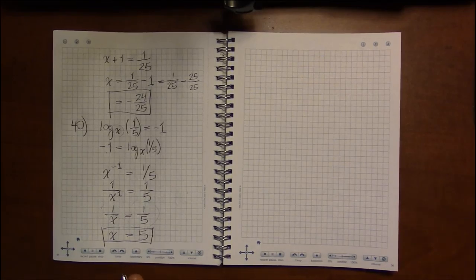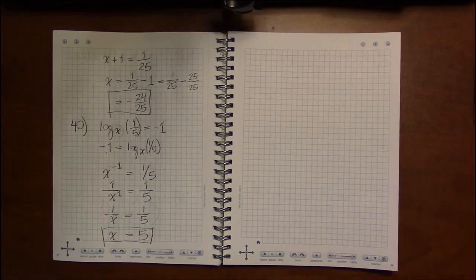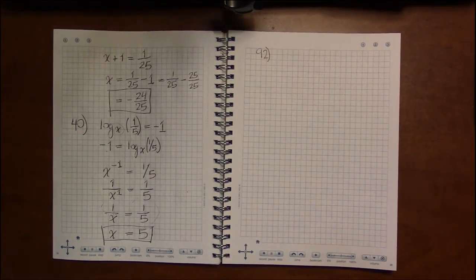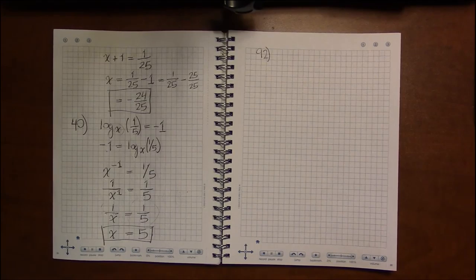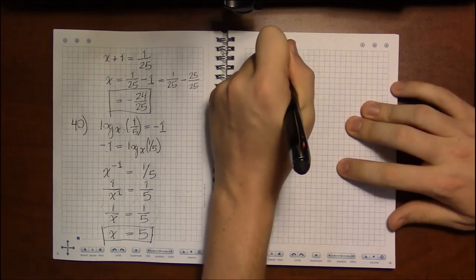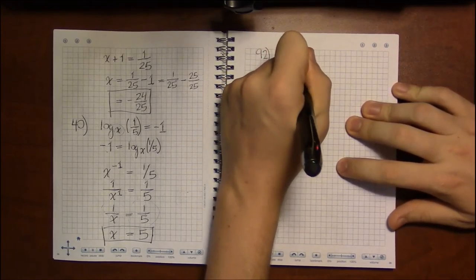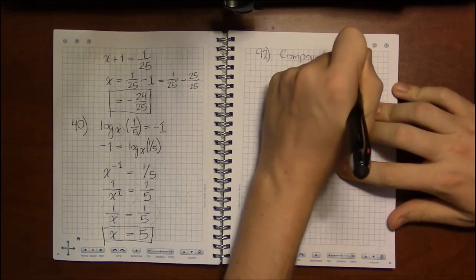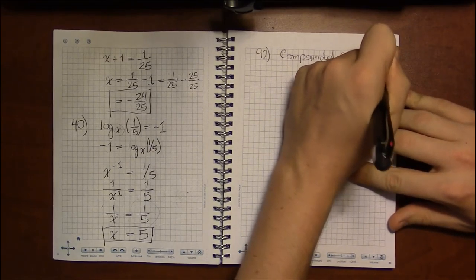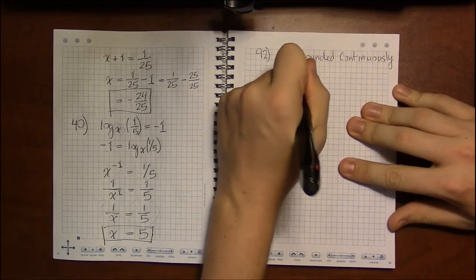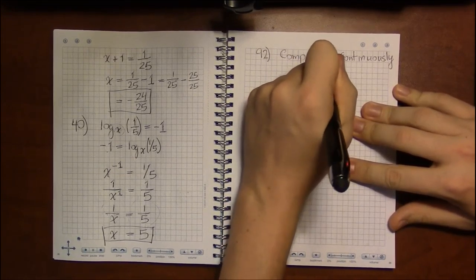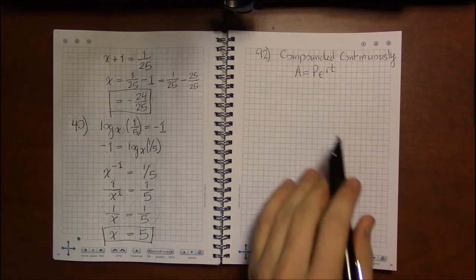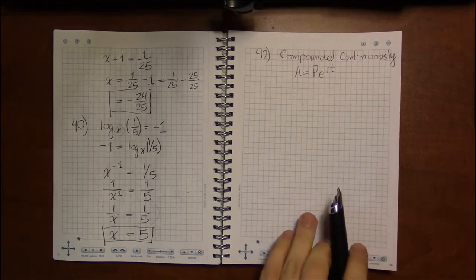So since we're going ahead and doing examples, I want to do a compound interest example. This is problem 92. And we're going to use the compounded continuously model, which is the PERP model. So that is A equals PE to the RT, where E is that weird number. You know, that 2.718 number.